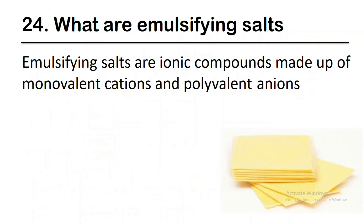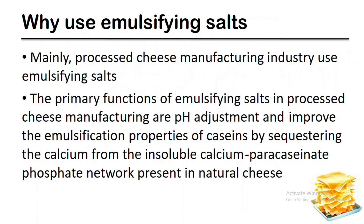Emulsifying salts are ionic compounds made up of monovalent cations and polyvalent anions. They are mainly used in the processed cheese manufacturing industry. The primary functions of emulsifying salts in processed cheese manufacturing are pH adjustment and improving the emulsification properties of casein by sequestering calcium from the insoluble calcium paracaseinate phosphate network present in natural cheese.